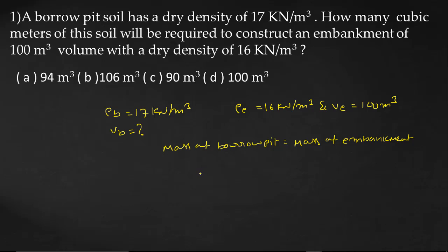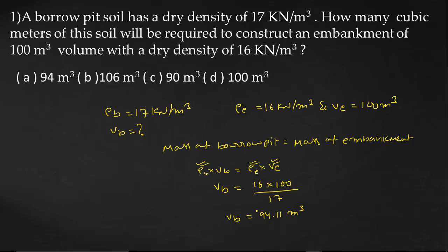Applying the relation: density × volume = density × volume. So density of Borrow Pit × volume of Borrow Pit = density of Embankment × volume of Embankment. Therefore, volume of Borrow Pit V_B = (density of Embankment × volume of Embankment) / density of Borrow Pit = (16 × 100) / 17 ≈ 94.11 m³. So our answer is A.